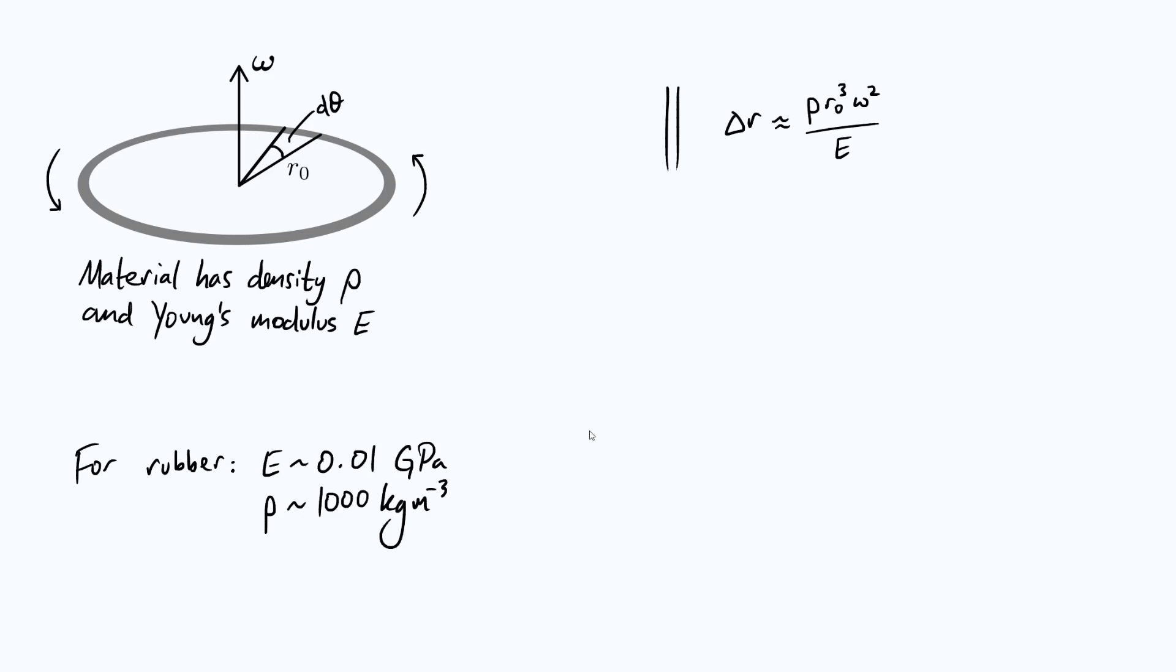Now just to get a sense of the numbers I found some typical values for rubber. Apparently a typical Young's modulus would be 0.01 gigapascals and a typical density would be a thousand kilograms per meter cubed.